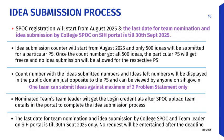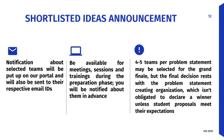For the idea submission process, the team leader needs to enter details on the SIH portal including: verifying pre-entered team name, authorization letter, names of all six team members, gender of team members, email IDs and mobile numbers. They also need to submit the chosen problem statement or student innovation category, idea title, idea description, and idea presentation as a PDF. Shortlisted idea announcements will be made via notification on the SIH portal, with 4 to 5 teams per problem statement potentially selected for the grand finale.